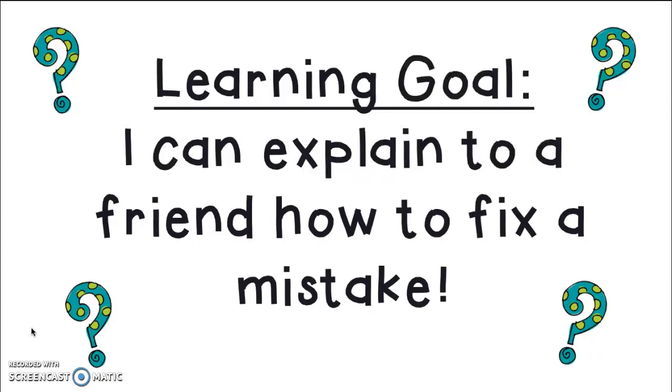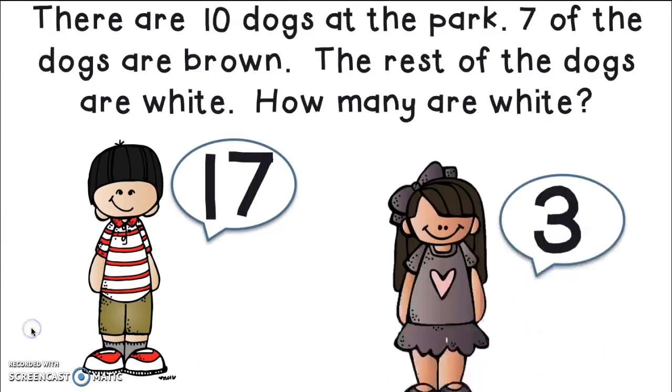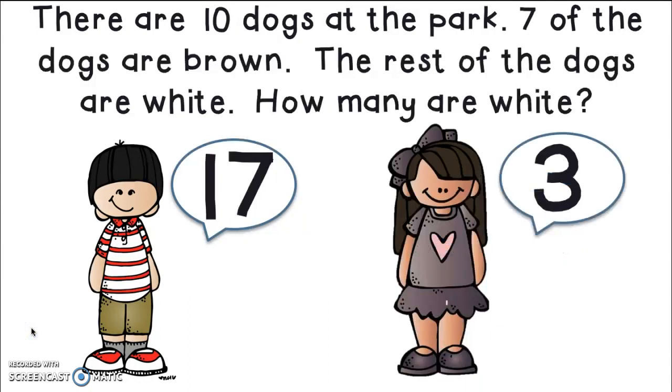Let me show you what happened this morning. I gave them this problem: There are 10 dogs at the park. Seven of the dogs are brown. The rest of the dogs are white. How many are white? Right away, Shane said 17 and Kara shouted out three. Then they started arguing about who was right. So what are you thinking? Who do you think is correct? Shane at 17 or Kara at three? Let's see what they did.